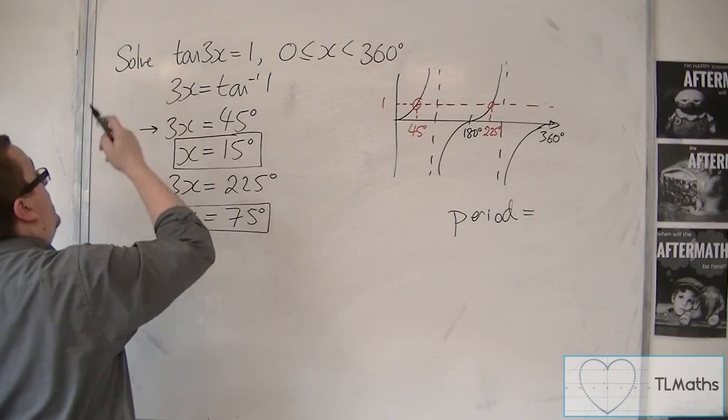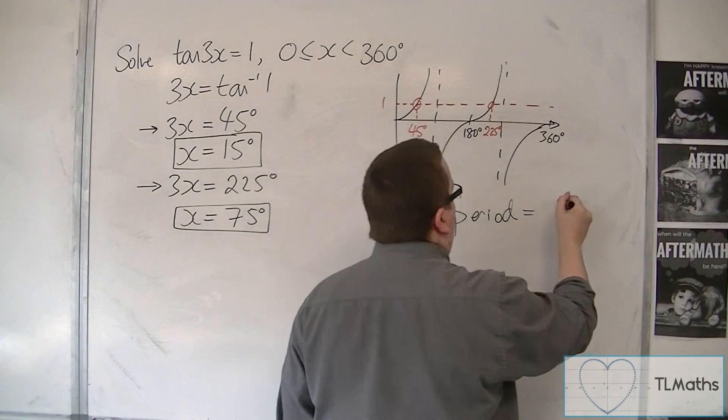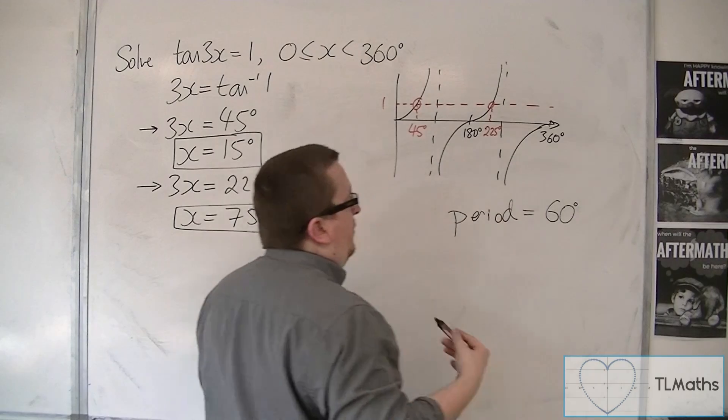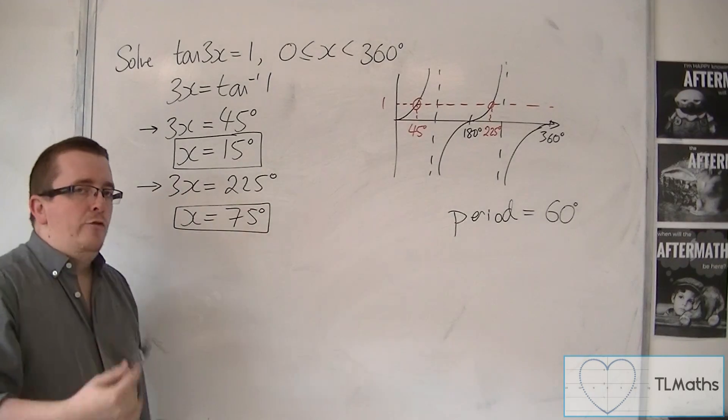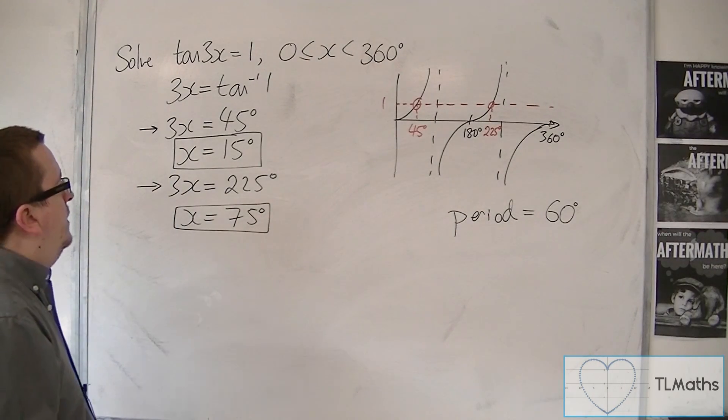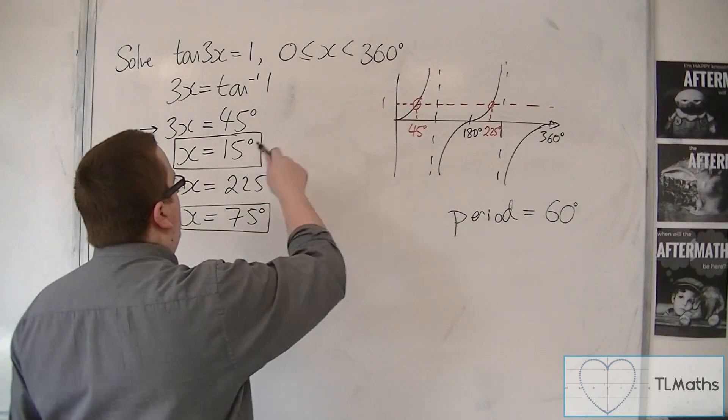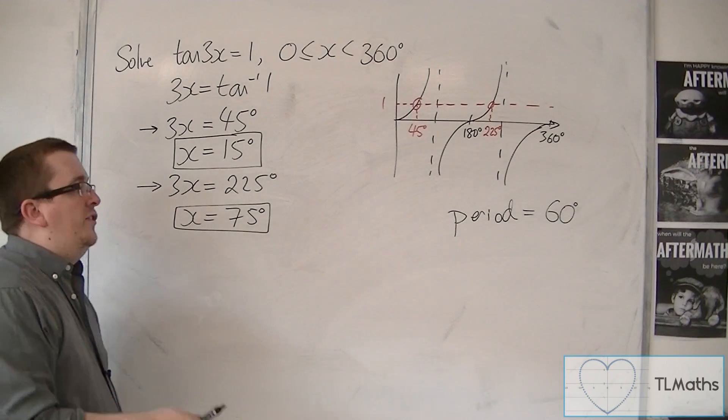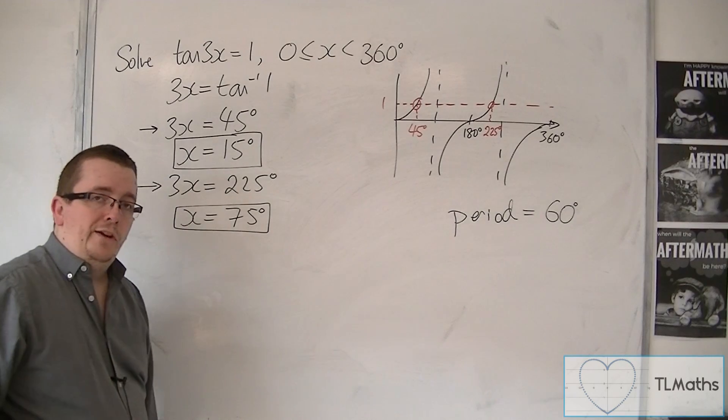We divide 180 by that number there, and so that's 60 degrees. So now tan is repeating itself every 60 degrees. So I can add 60 degrees to each of these until I have found all of the solutions.